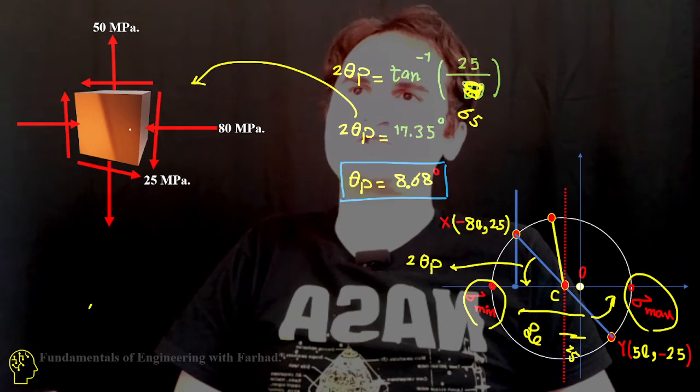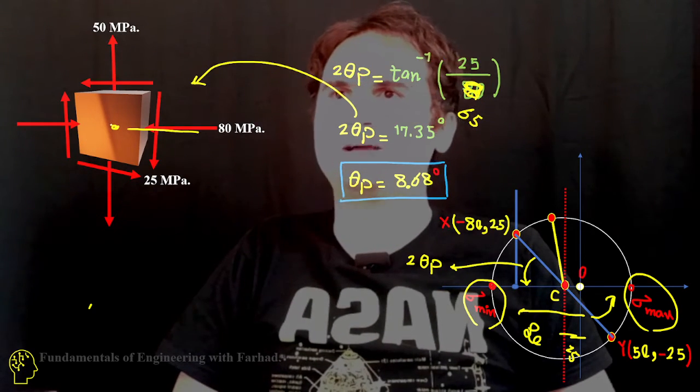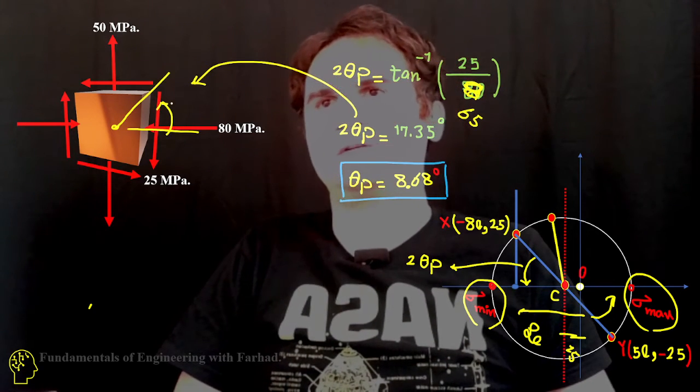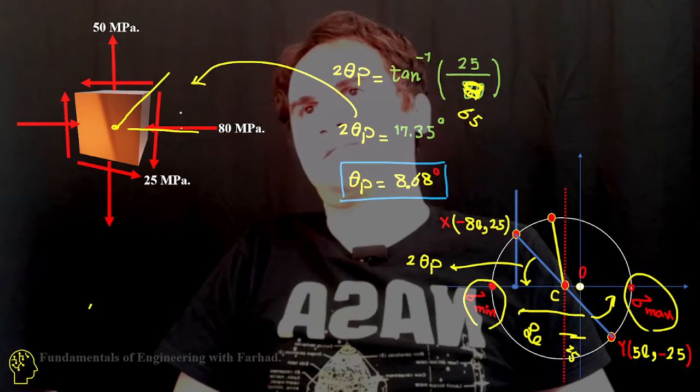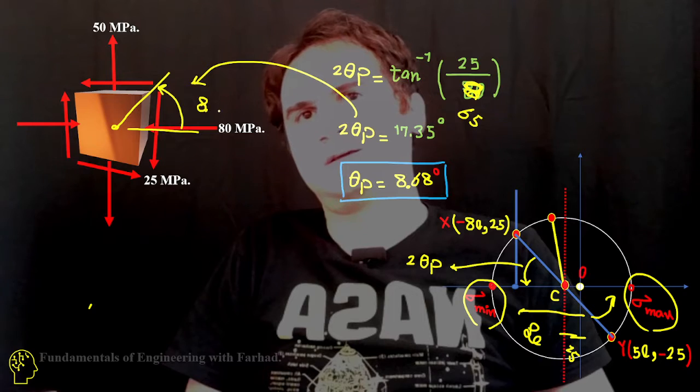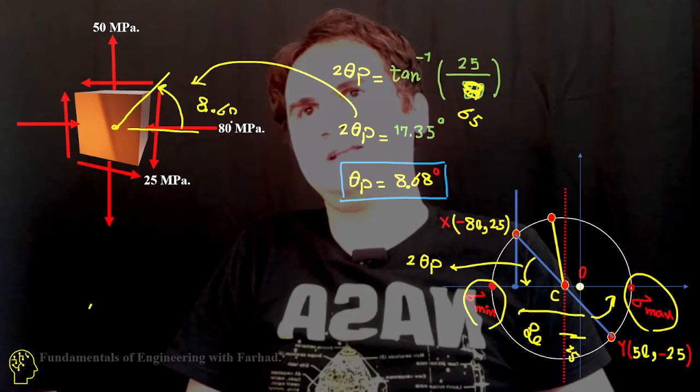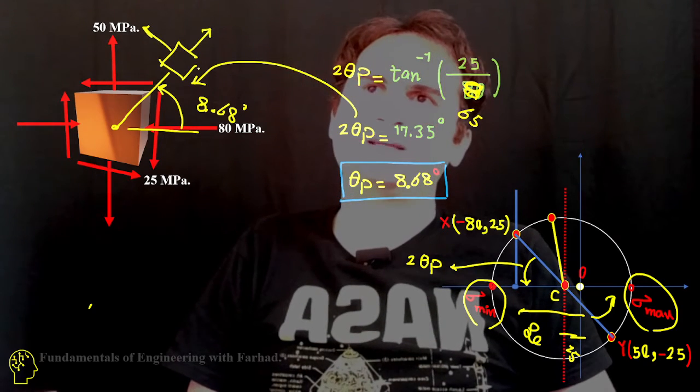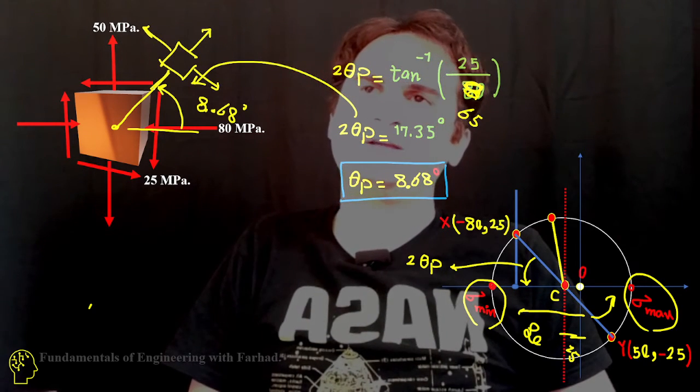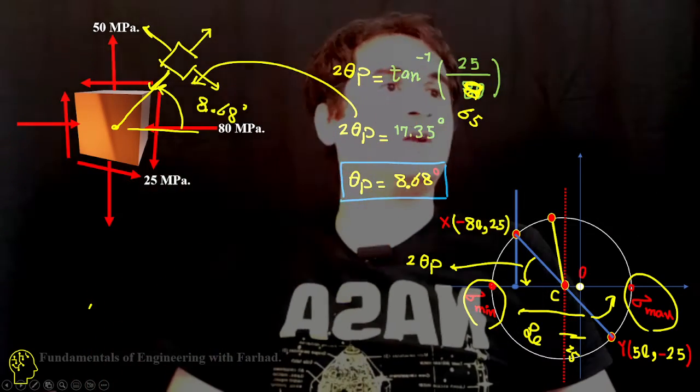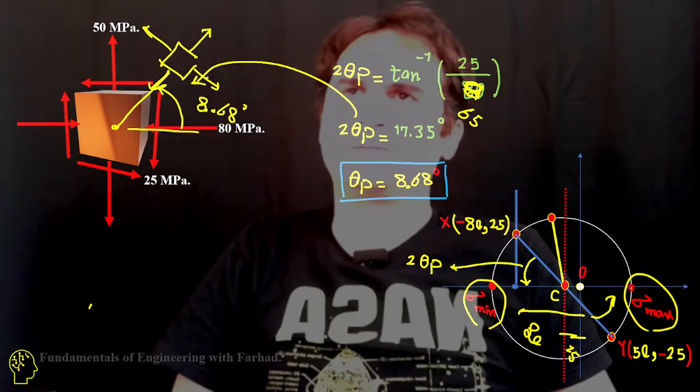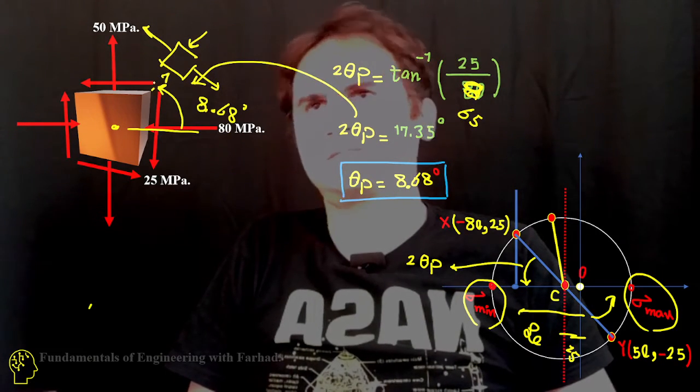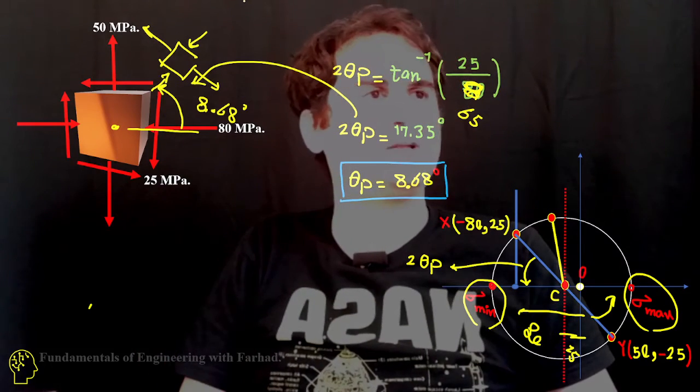So if this is our sample and we just rotate it like 8.68 degrees counterclockwise, we reach to a state of stress which we only experience as the normal, so sigma minimum. The point is there is no shear there.